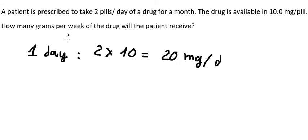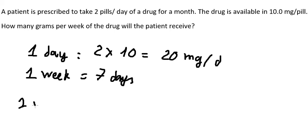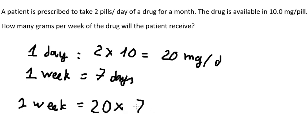So one week has seven days. Now we can find how many milligrams for one week. Because one day we have only 20 milligrams, if we take for one week we have 20 multiplied by 7, and we get 140 milligrams per week. But the question uses grams, not milligrams.